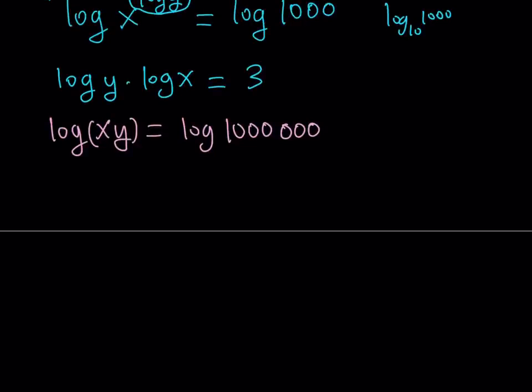And as you know, log xy, we have the product to sum, is that what it's called, or just expanding it? Whatever you want to call this, log xy can be written as log x plus log y. And then log 1,000,000 is 6, because 1,000,000 has six zeros. Great.